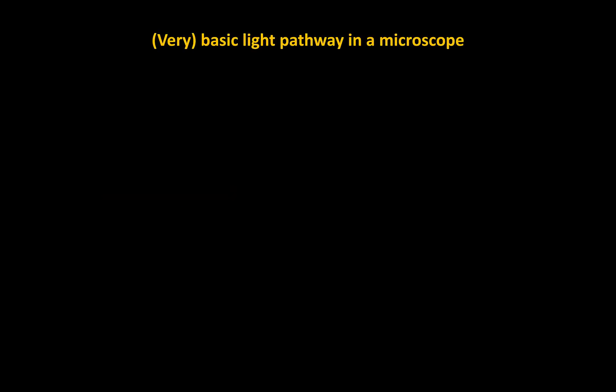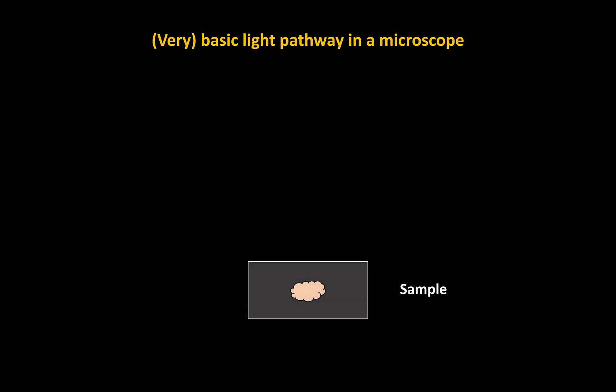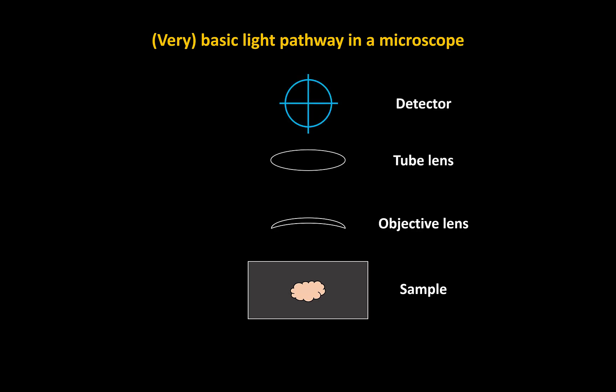Let's start with a very basic light pathway in a microscope. We have our sample sitting on a stage, an objective lens, a tube lens, and finally a detector. For a 3D sample, it's likely that we'll want to look inside the sample and image somewhere deeper into it than just the surface.